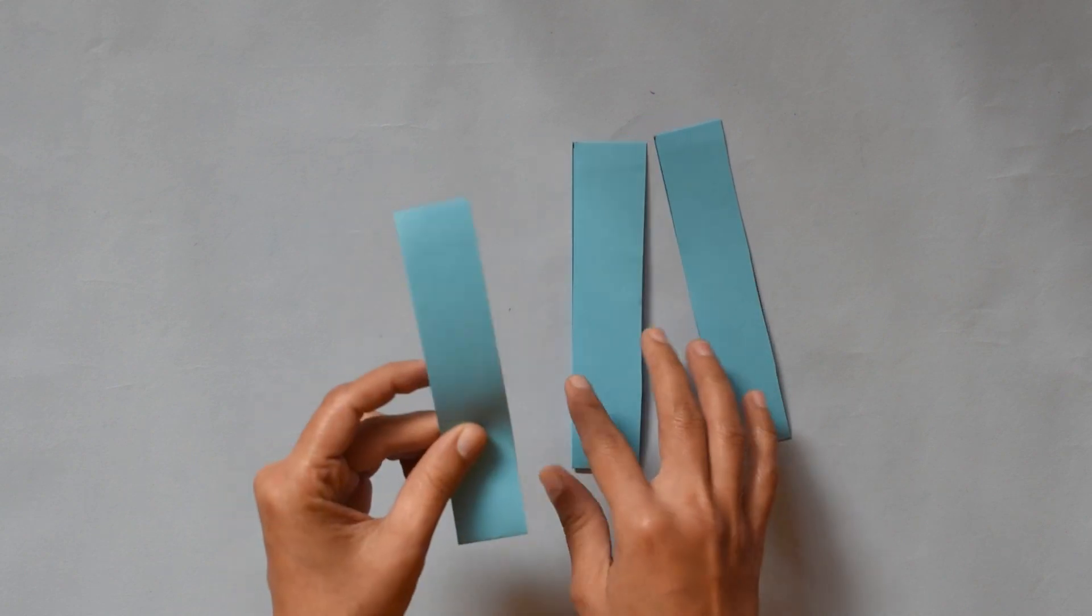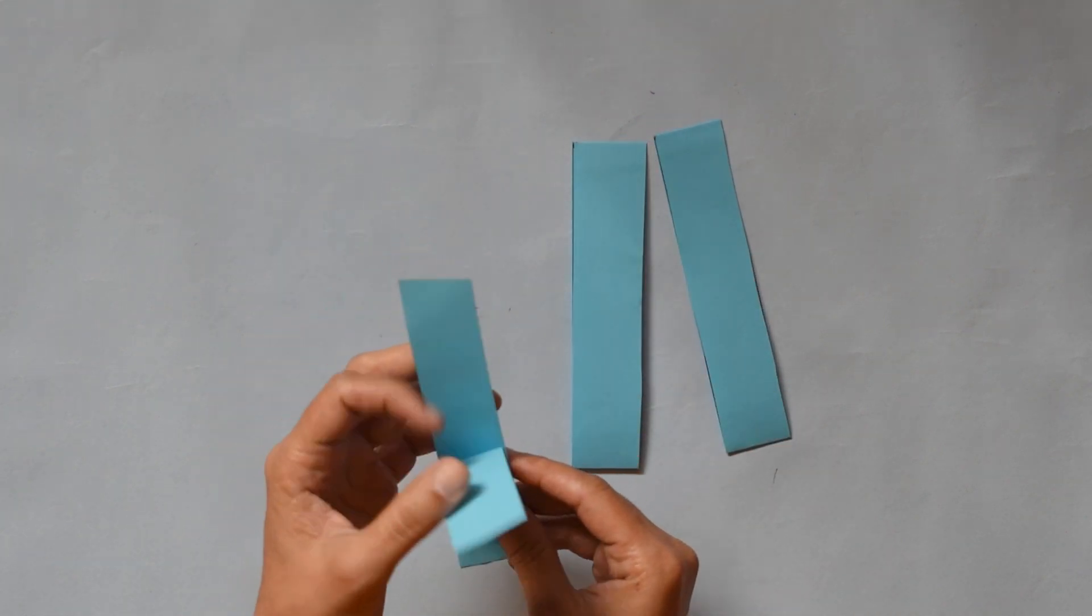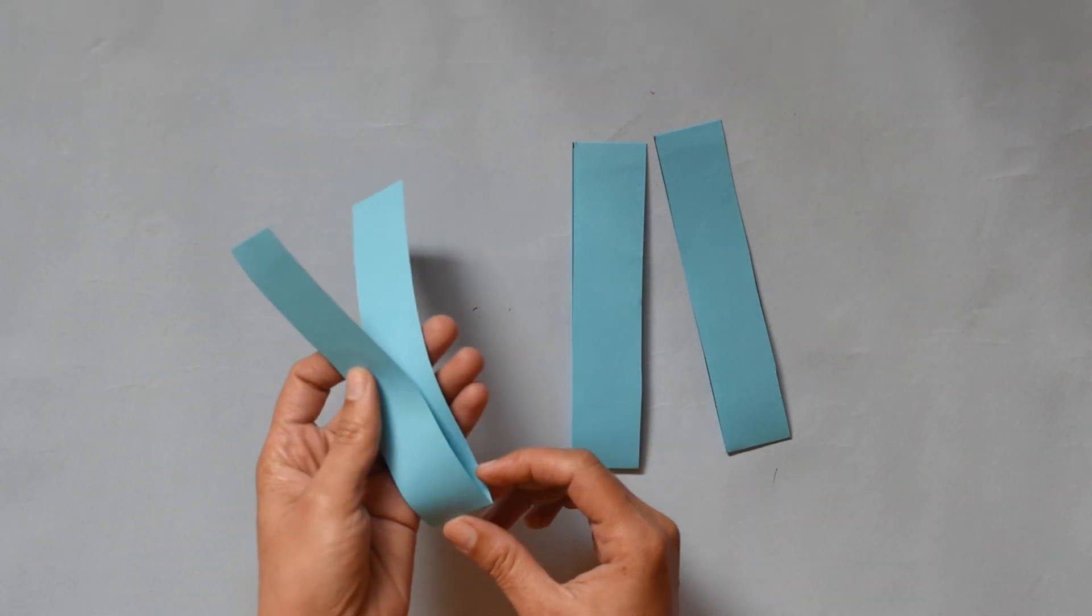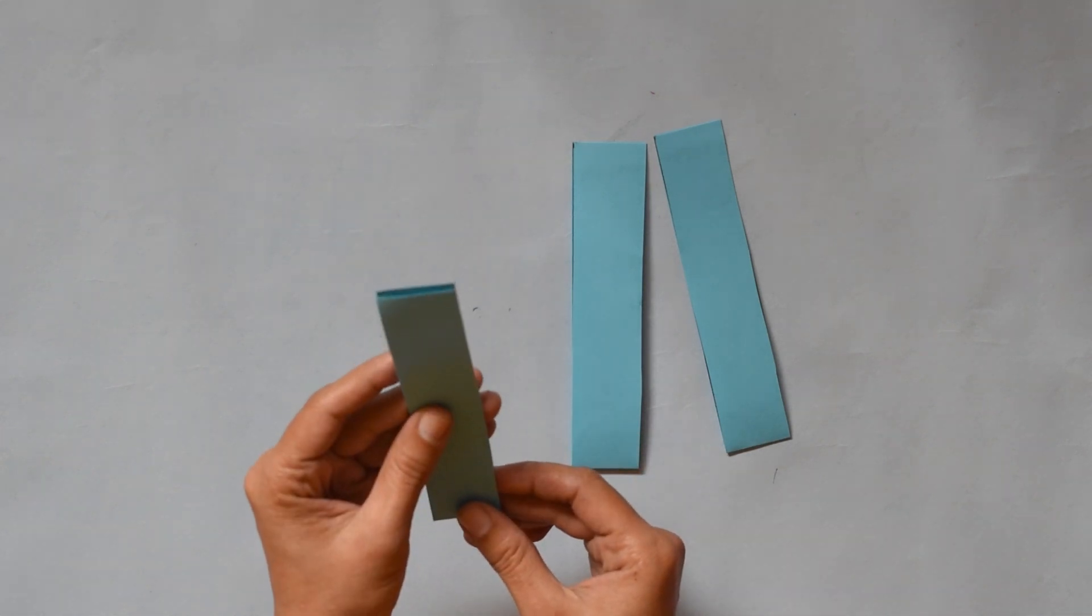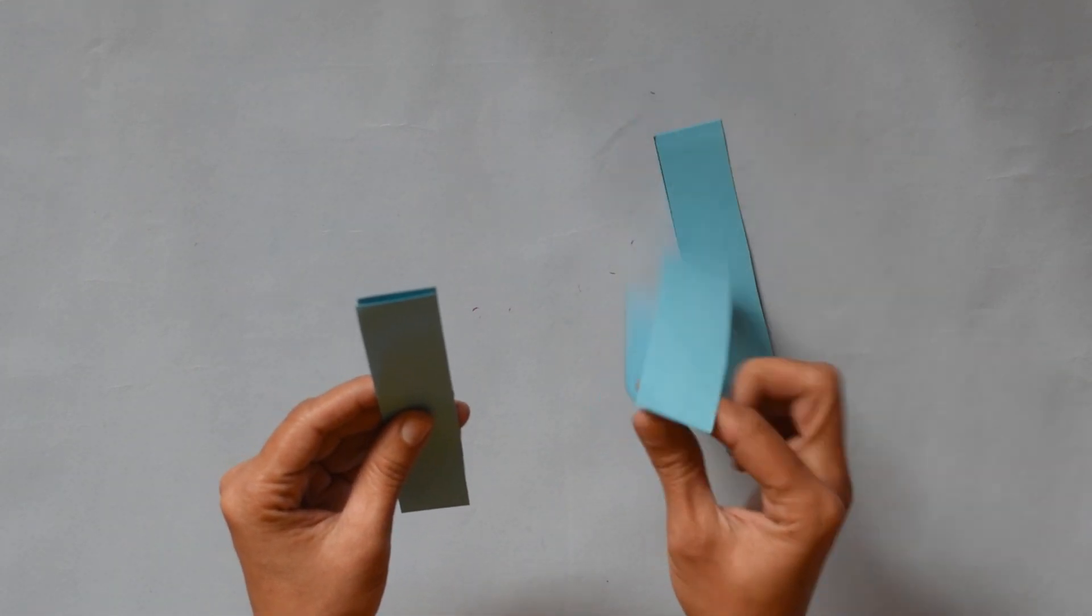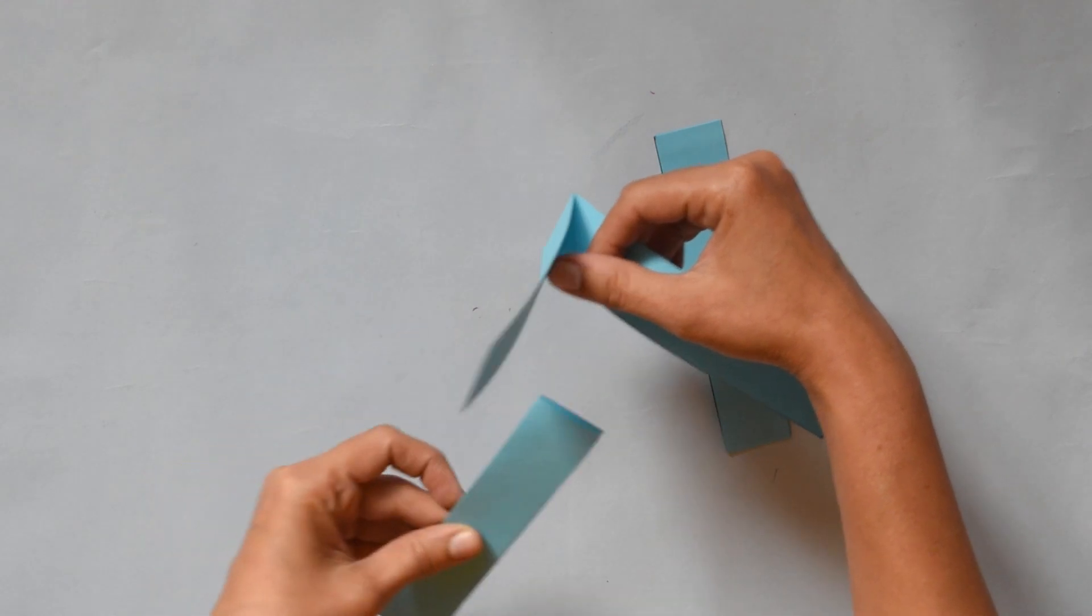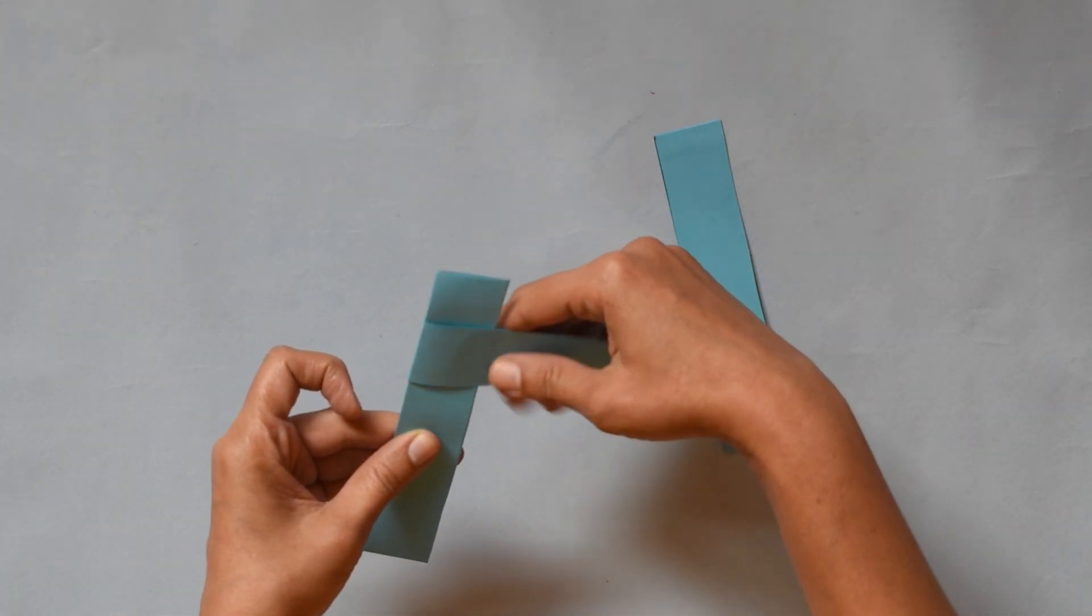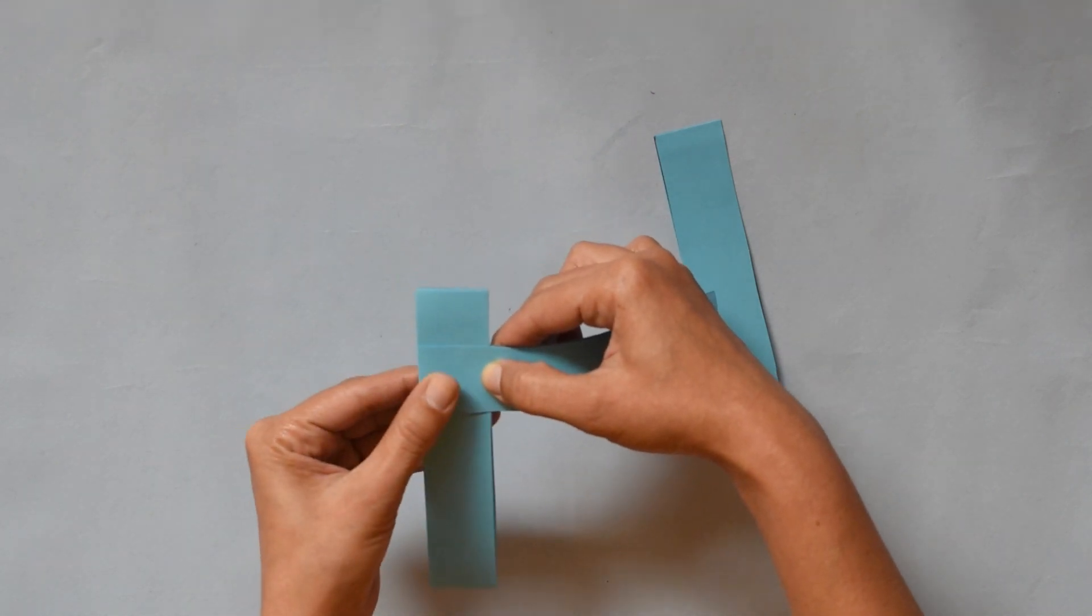Now take 1 strip. Here we have opening part and down side we have closed part. So we hold it like that. Take another one. This is your opening part and put like that. And close it.